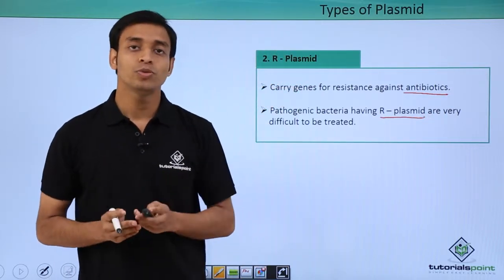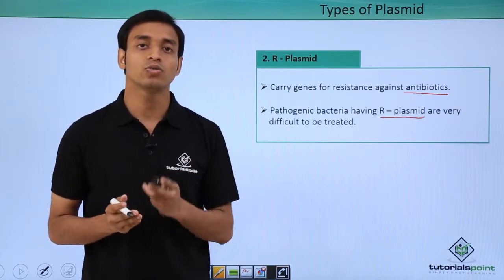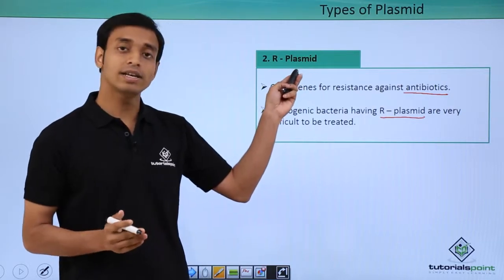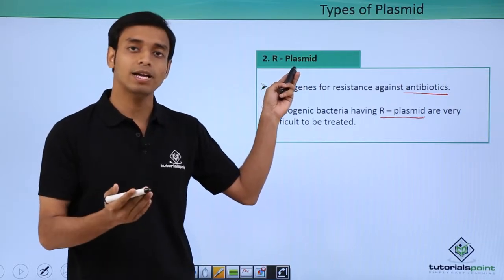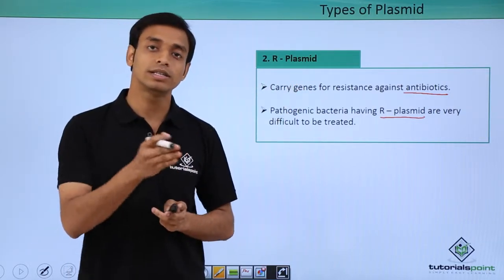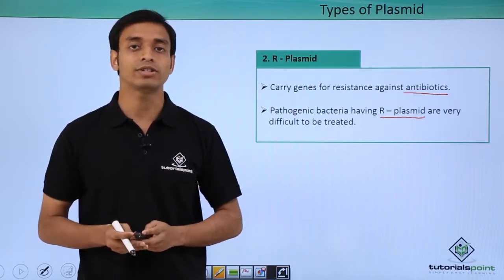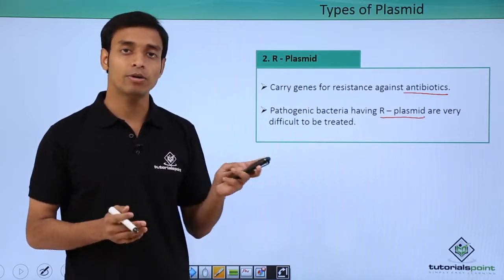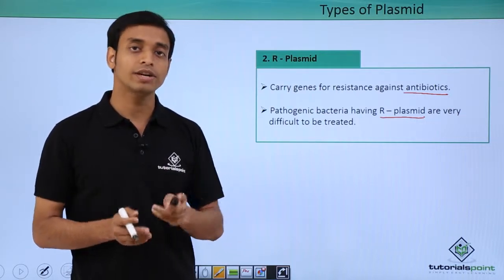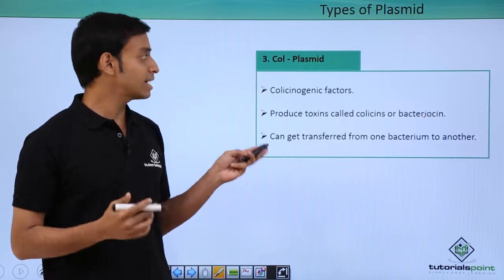Because we normally treat bacterial infections with antibiotics, if bacteria contain R plasmids they are resistant to those antibiotics and we cannot kill them using the normally available antibiotics. These are called resistant strains of bacteria.